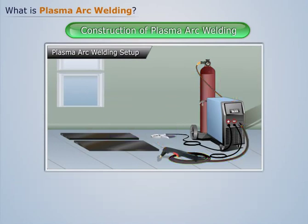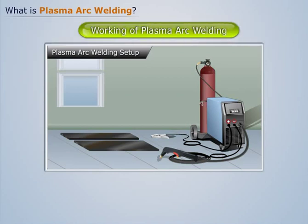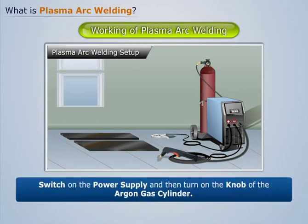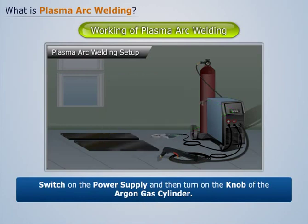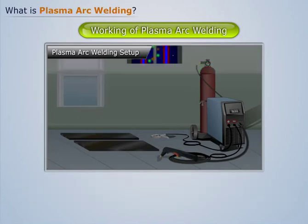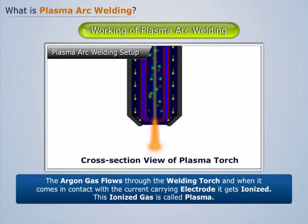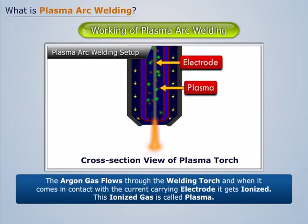Now, let's use this setup to join these two metal plates. Let us switch on the power supply and then turn on the knob of the argon gas cylinder. We see that the argon gas flows through the welding torch, and when it comes in contact with the current-carrying electrode, it gets ionized. This ionized gas is called plasma.